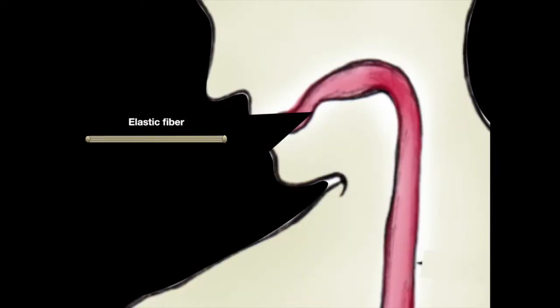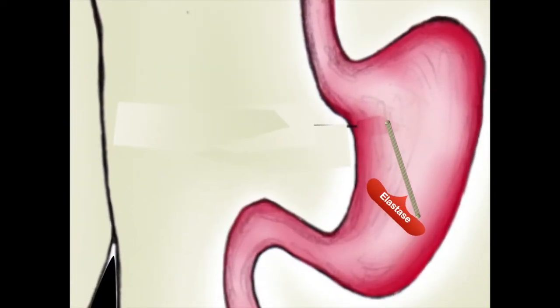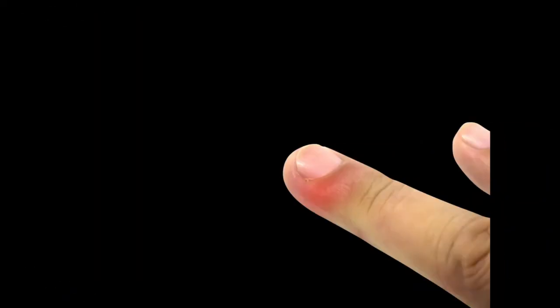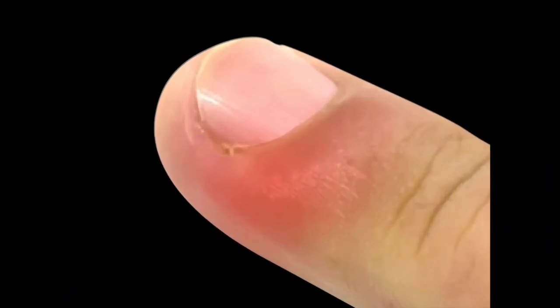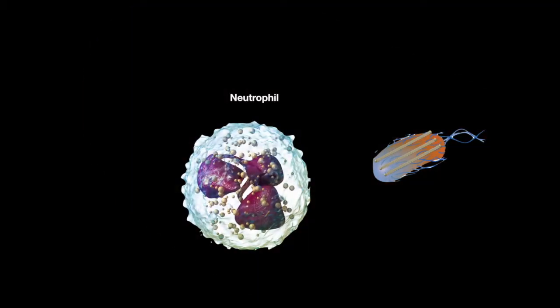Elastase is an enzyme that breaks down elastic fibers. This is useful when elastic fibers are in the food you eat. Neutrophils also secrete elastase during inflammation.